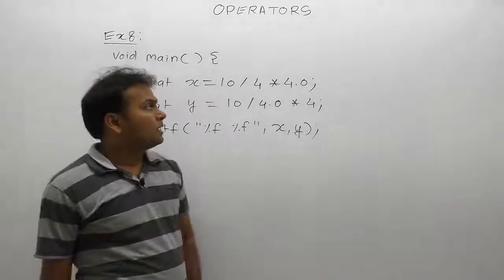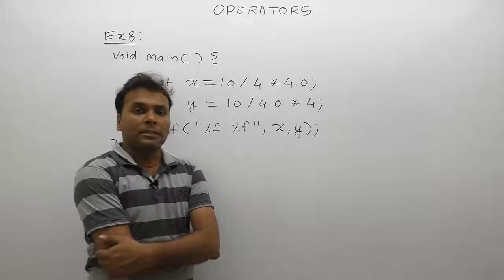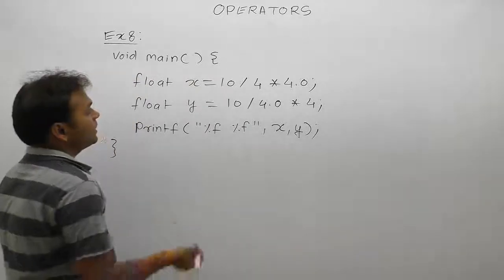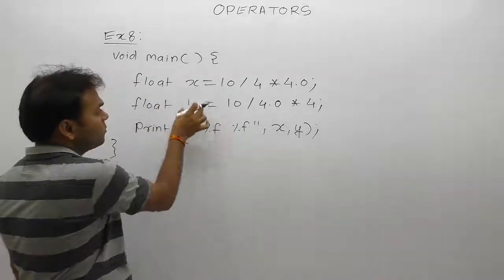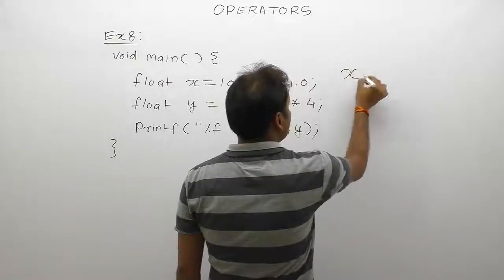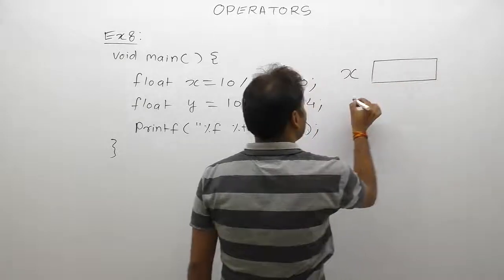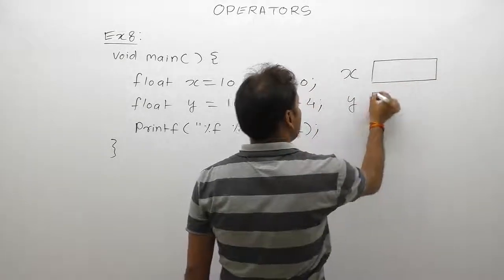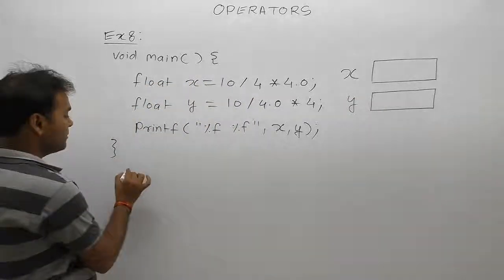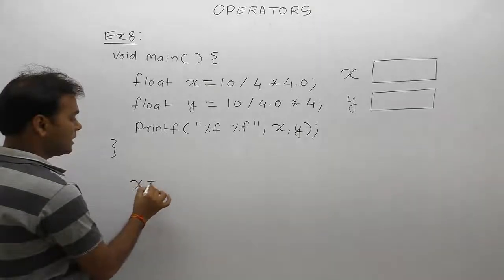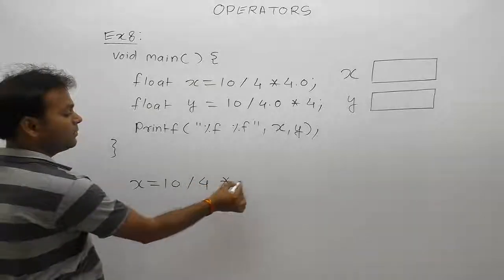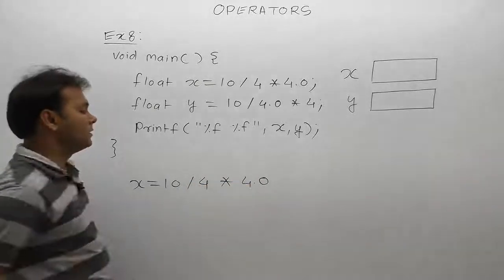Now next example regarding arithmetic operations. We are testing the behavior of arithmetic operations. Two variables are declared, x and y, both are float variables, therefore decimal numbers can be stored inside these variables. For x, the expression given is x equals 10 divided by 4 multiply by 4.0. We'll solve this expression.